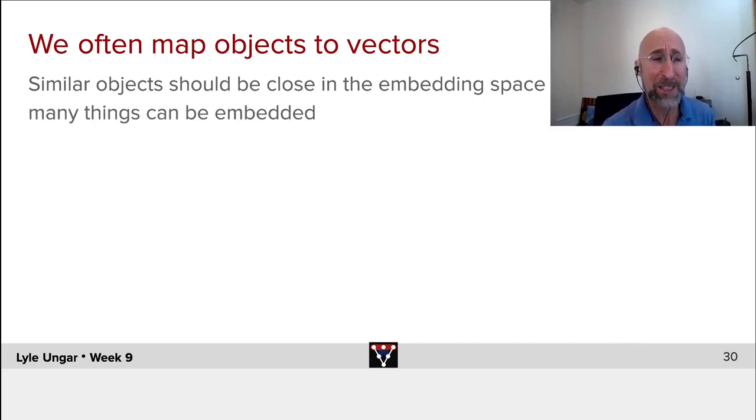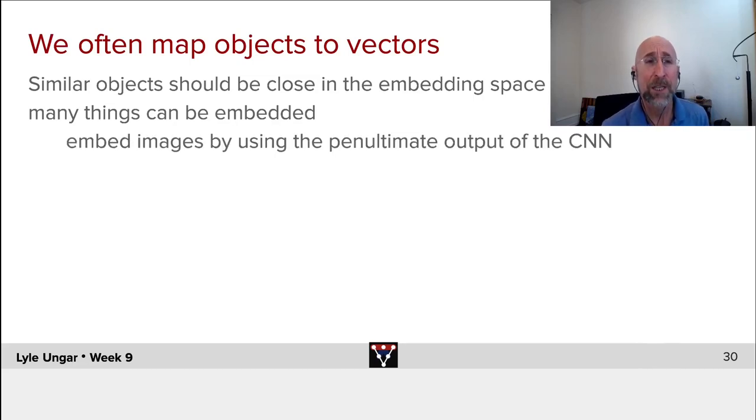Now, lots of things can be embedded. You might think that images don't need to be embedded because images are already a vector, but that's wrong. Two images may be quite different in pixel space, their original input to a neural net.